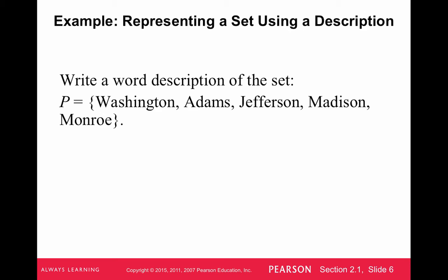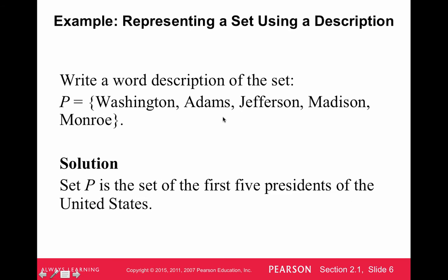Write a word description of the set. So here we have the set P, Washington, Adams, Jefferson, Madison, Monroe. Set P, if we were to describe this with a sentence, is the set of the first five presidents of the United States.